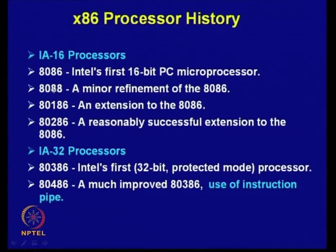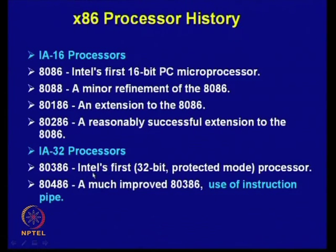The 8088 — a minor refinement of 8086 — became very popular in the IBM PC. Then the 80186 is an extension of 8086, and the 80286 is a more powerful, reasonably successful extension of 8086. Then came the IA-32 32-bit processors: the 80386 — Intel's first 32-bit processor — and then 80486, a much improved version of 80386 which used instruction pipelining.